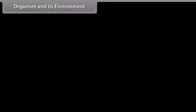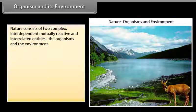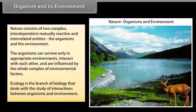Organism and its environment: Nature consists of two complex interdependent, mutually reactive and interrelated entities — the organisms and the environment. Organisms can survive only in appropriate environments, interact with each other, and are influenced by the whole complex of environmental factors. Ecology is the branch of biology that deals with the study of interactions between organisms and environment.